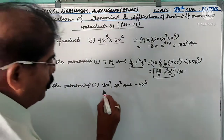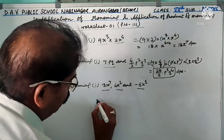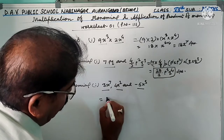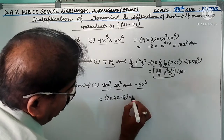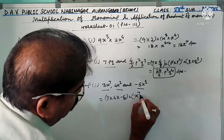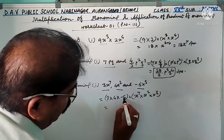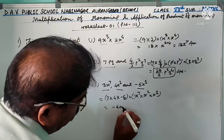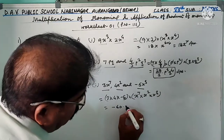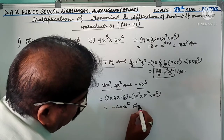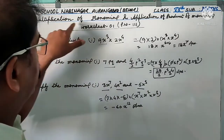Third question: multiply the monomials — three terms are separately given. Solve the same way. First multiply the constant terms: 3 × 4 × (−5) = −60. Then multiply the variables: x⁷ × x² × x³ = x^(7+2+3) = x¹². So the answer is −60x¹². These are all the examples related to multiplication of monomials.